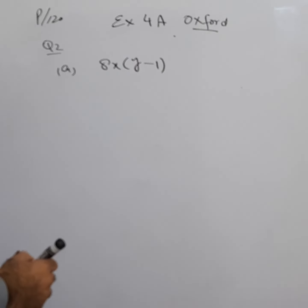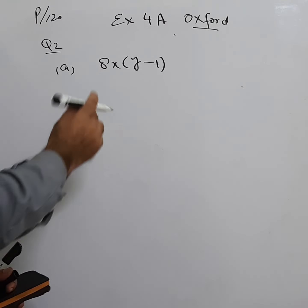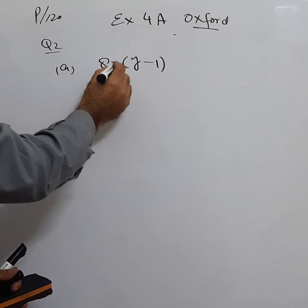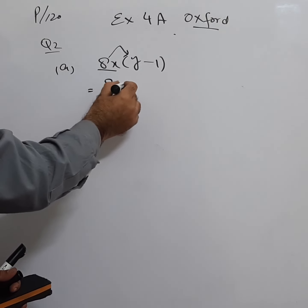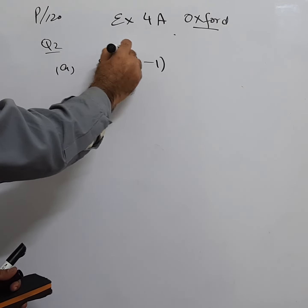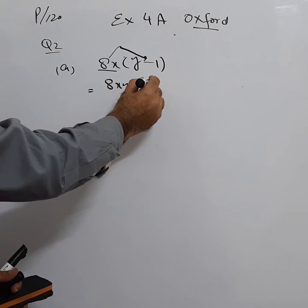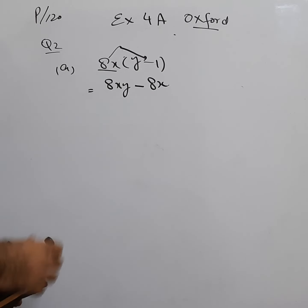First part will be very quick because these are very simple. 8x into (y - 1). The statement is expand each of the following expressions, so we need to expand this expression. We will open the bracket. 8x will be multiplied with y, 8x into y becomes 8xy. Then this 8x will be multiplied with -1, it becomes -8x.